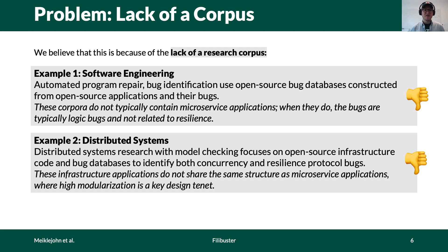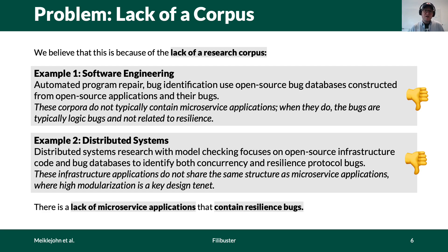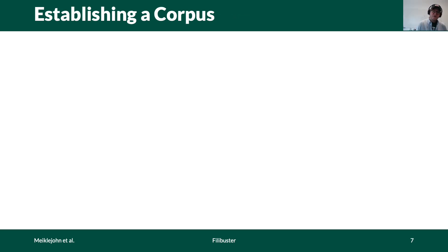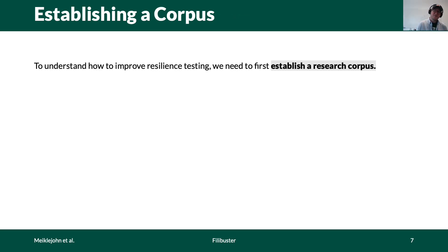However, these infrastructure applications look quite different from microservice applications — specifically, they focus on deploying replicas rather than highly modularized services that provide one particular narrow service. So there is a lack of microservice applications available to researchers that contain bugs they can use for resilience engineering research. In order to do our research, we first had to establish a corpus.